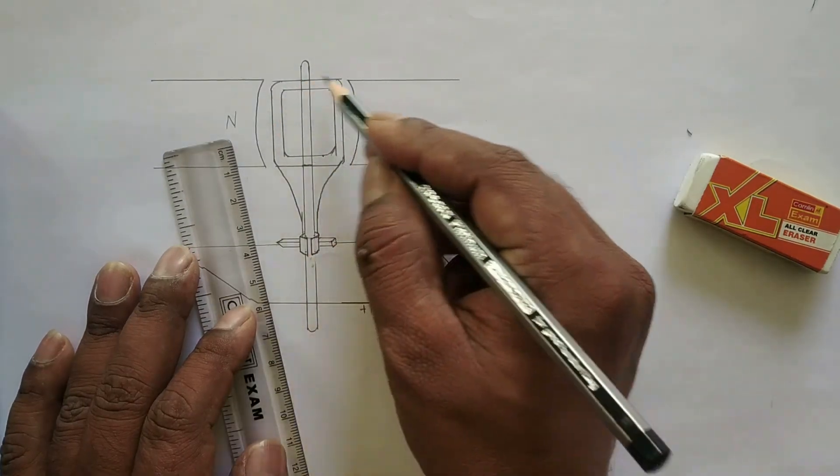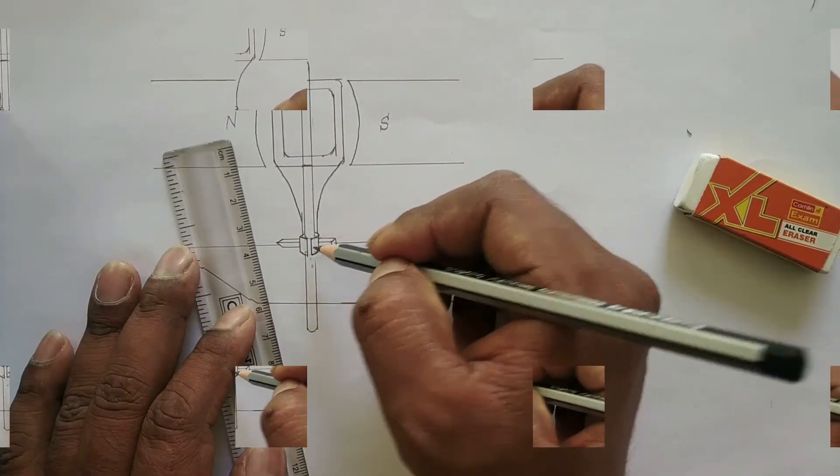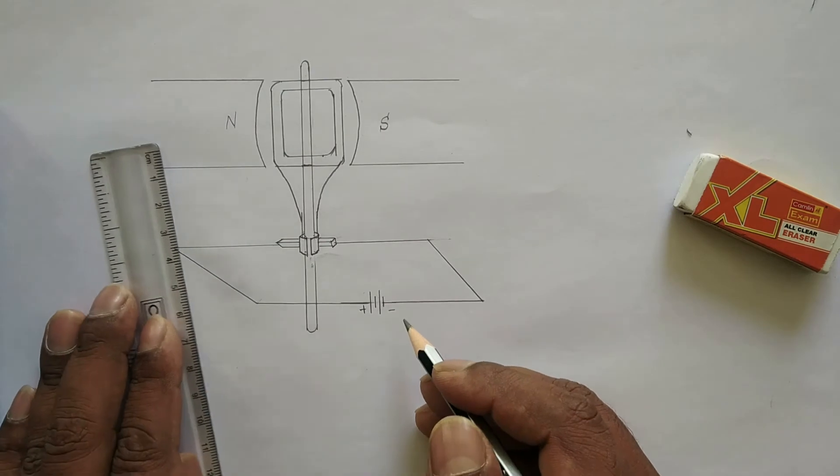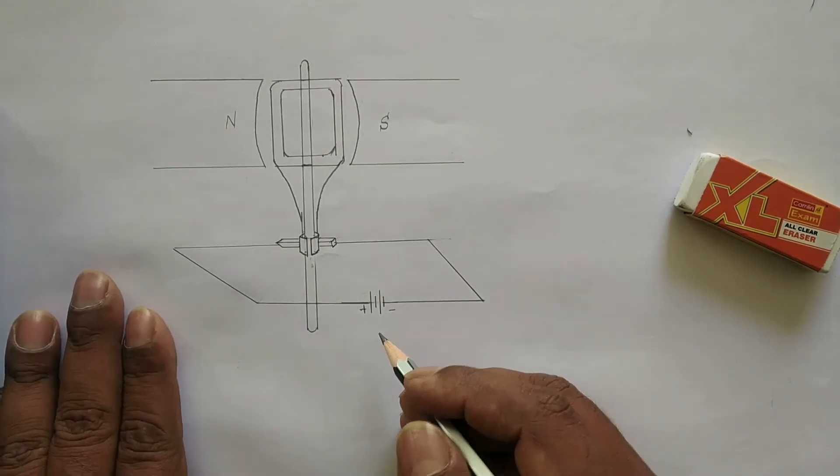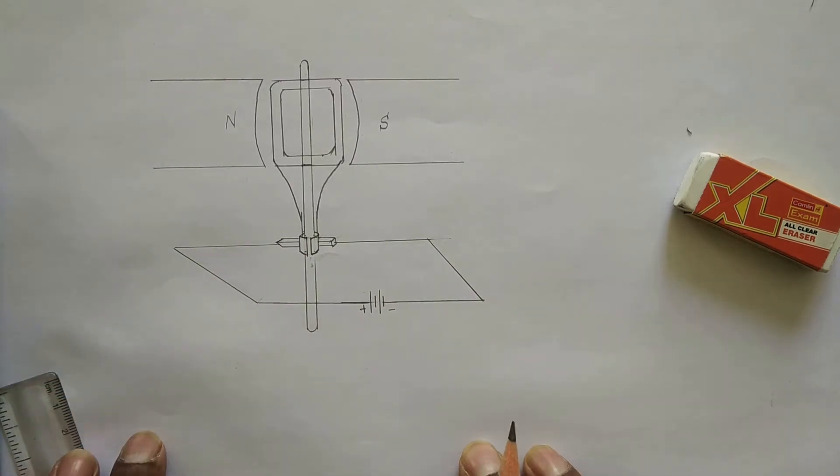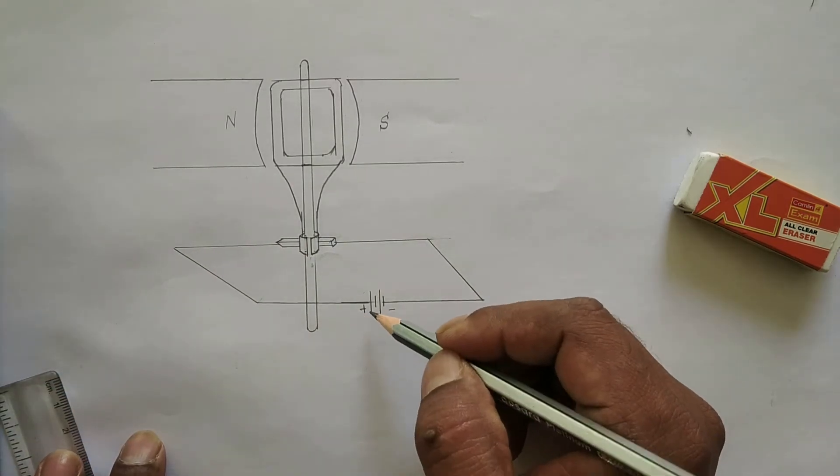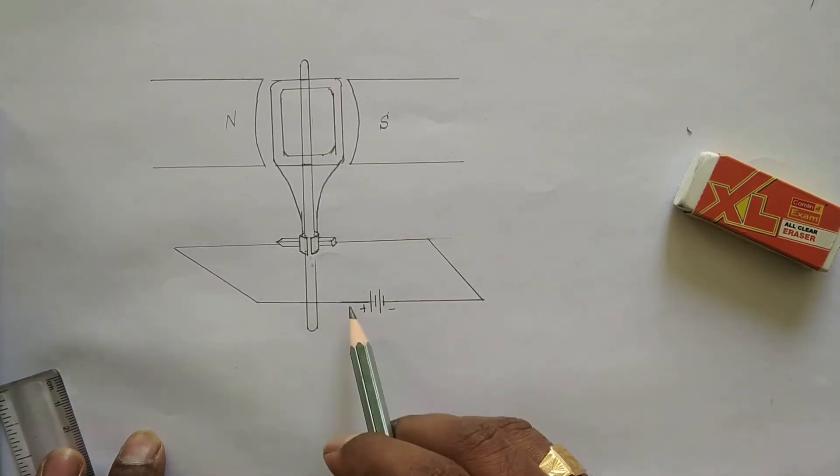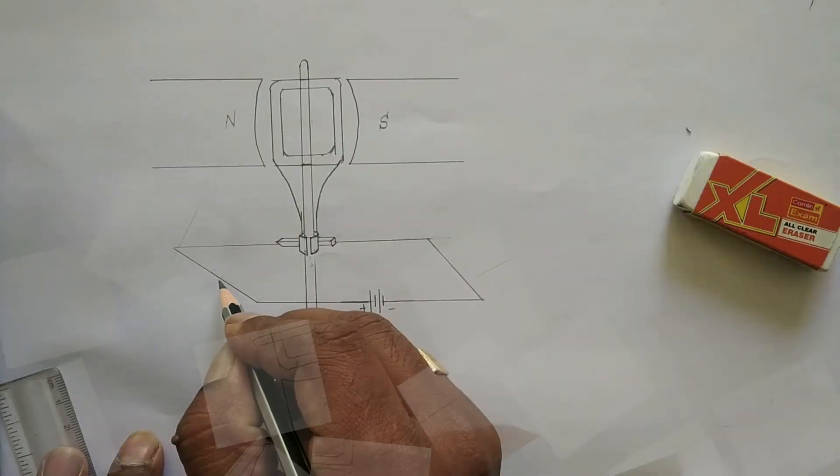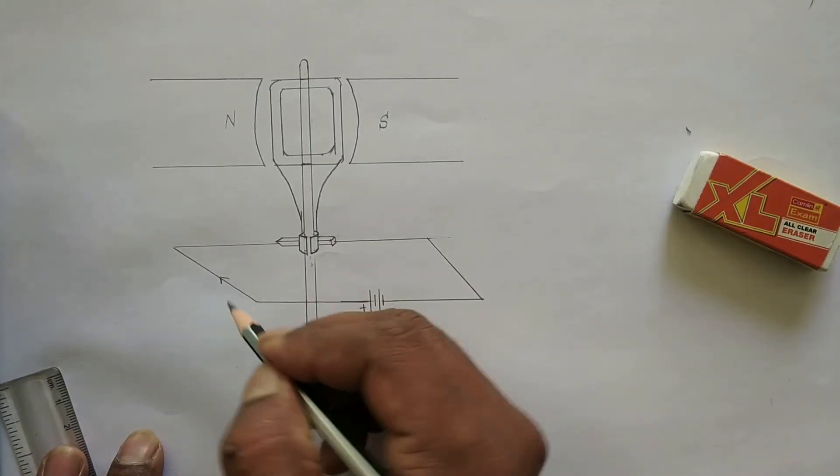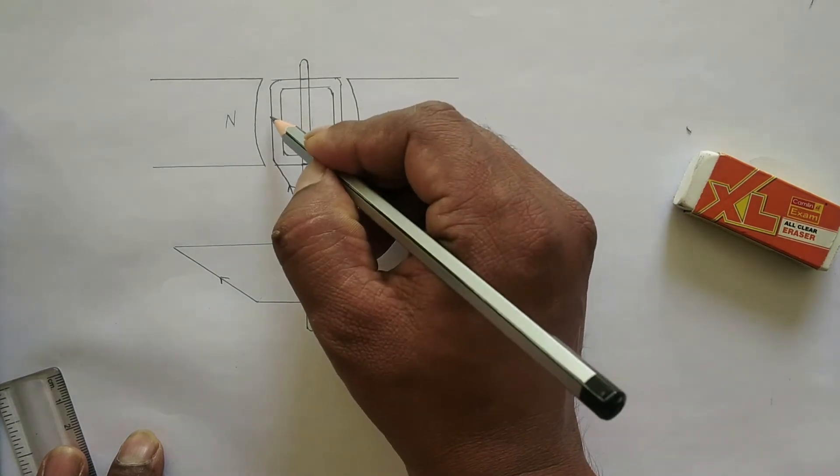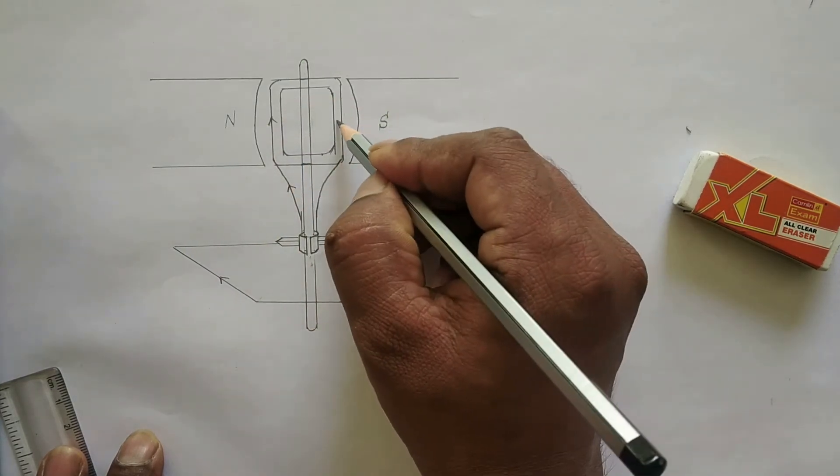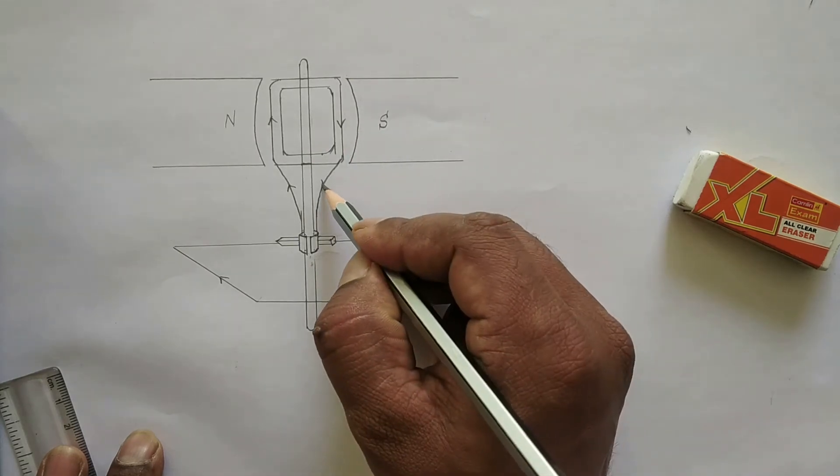Now you have to mark. Always remember, in the first lesson you learned that from the positive terminal of the battery, electricity will flow in the conventional direction. From the positive terminal of the battery, you have to mark arrow marks towards the negative terminal of the battery.